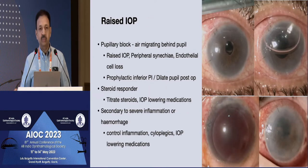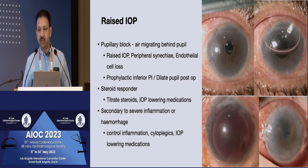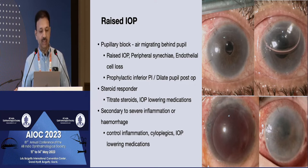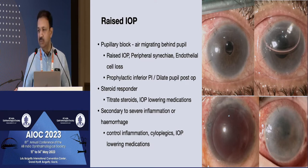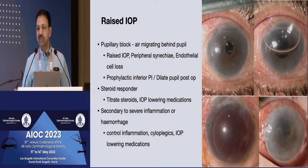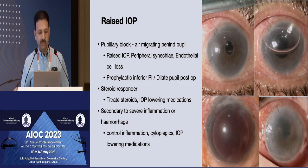Another problem, especially with lamellar grafts where you use air or gas tamponade — particularly with DALK if you have had a perforation and sometimes use an air fill to prevent a double anterior chamber — is pupillary block, where the air migrates behind the iris, resulting in raised intraocular pressure. If not managed, this can result in peripheral anterior synechiae and can also damage the optic nerve.